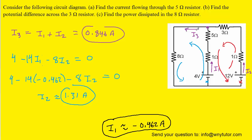Now that we have all the currents, we go back and change the direction of I1 in the diagram — erasing the upward arrow and showing it pointing downward instead — and update the sign from negative to positive. With all currents determined, we can answer each part of the question.